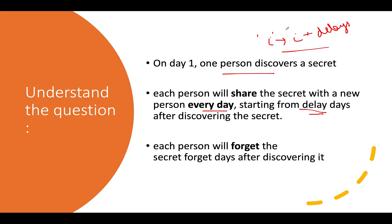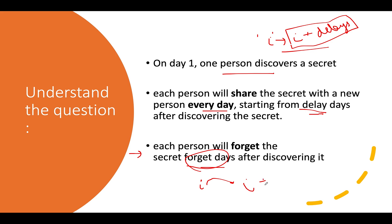So the day you can start spreading the secret is i plus delay. Now the third constraint: each person will forget the secret 'forget' days after discovering it. So if you discovered the secret on day i, you will be forgetting the secret after i plus forget days. These are two important constraints you need to remember for solving this question.